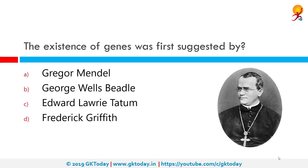The existence of genes was first suggested by whom? It was suggested by Gregor Mendel. Gregor John Mendel was a scientist, Augustinian friar, and abbot of Saint Thomas Abbey in Brno, Moravia. Mendel was born in a German-speaking family in the Silesian part of the Austrian Empire and gained posthumous recognition as the founder of the modern science of genetics.